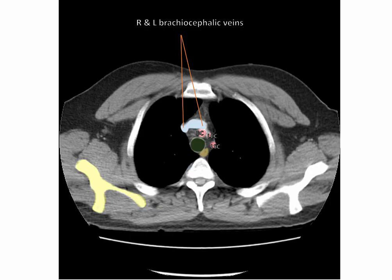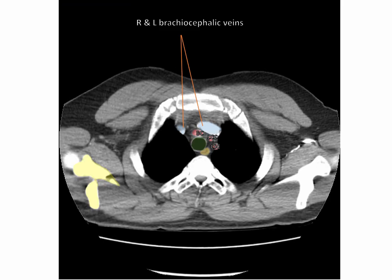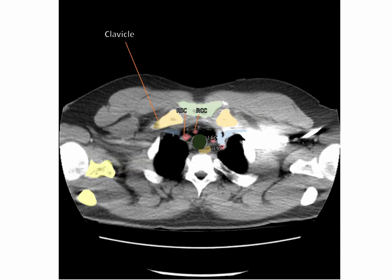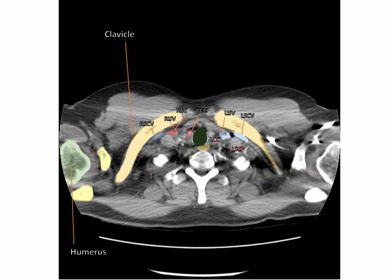When we see the brachiocephalic veins as two distinct profiles, we call this level the five-vessel level. Moving more superiorly, we can see the brachiocephalic trunk branching into the right common carotid and the right subclavian arteries. Also at this level, we can see the clavicle articulating here with the manubrium of the sternum at the sternoclavicular joint. Further superiorly, we see where the humerus is articulating with the glenoid cavity of the scapula at the glenohumeral joint. We see the right brachiocephalic vein being formed by the right internal jugular vein and the right subclavian vein here. Also we can see these vessels on the left. Also visible at this level is the coracoid process of the scapula.